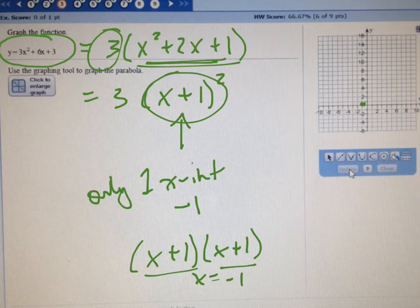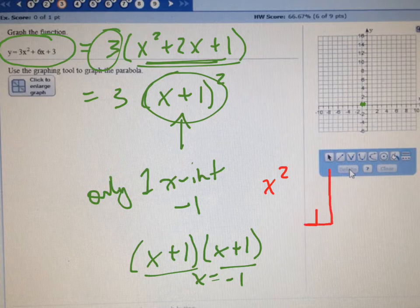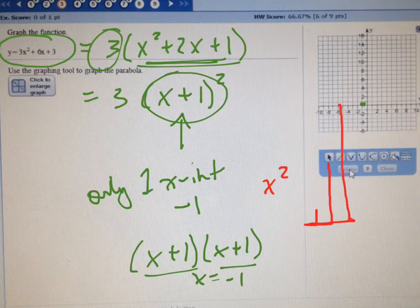So instead of going over 1 up 1, over 2 up 4, which a normal x squared would do, you would go over 1 up 1, over 2 up 4, over 3 up 9, because you're squaring it each time. Well, now you're going to triple that.